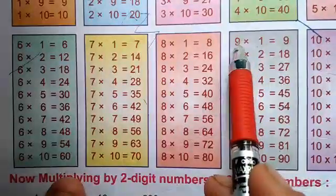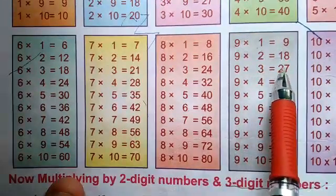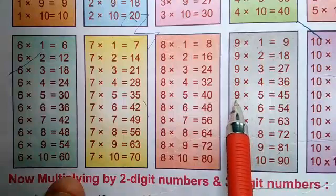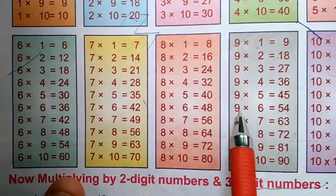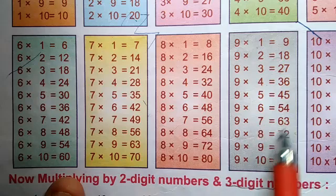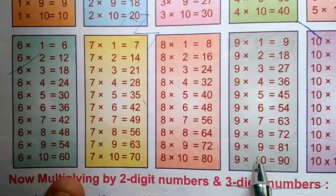9 times 1 is 9, 9 times 2 is 18, 9 times 3 is 27, 9 times 4 is 36, 9 times 5 is 45, 9 times 6 is 54, 9 times 7 is 63, 9 times 8 is 72, 9 times 9 is 81, 9 times 10 is 90.